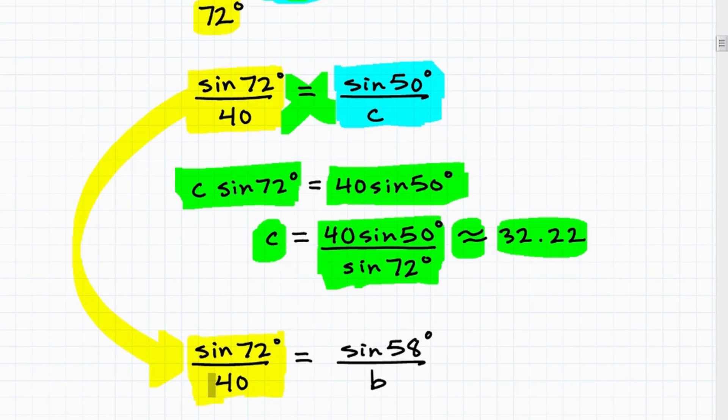This sine of 72 over 40, or I could have used now sine of 50 over 32.22. So if you use a different setup, that's perfectly fine. It's not a big deal. Because remember, the law of sines says you can use any ratio because all three angles and their respective sides are proportional.